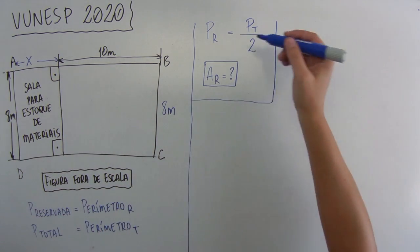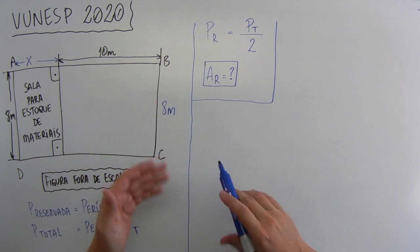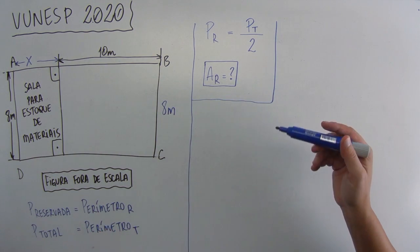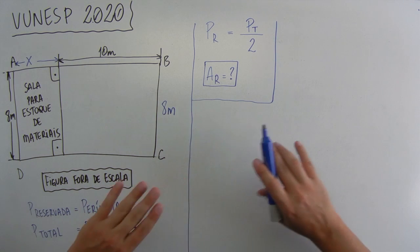Mas, vamos com calma. Primeiro, vamos descobrir o que é o perímetro da área reservada. Se você tem dúvida nisso, tem uma aula sobre isso, você pode clicar aqui na letra I, ou então no curso de matemática básica, que já tá lá no ar pra você ver com calma, resolver bastante exercício.